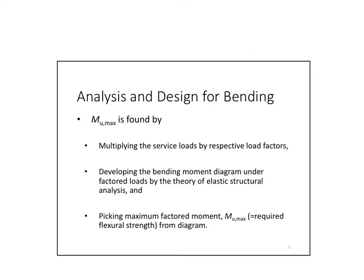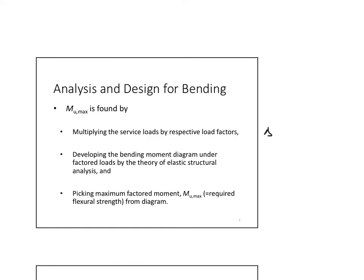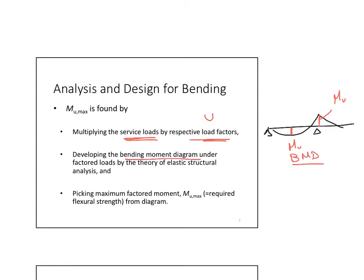Where do we get MU from? From regular analysis of structures. Looking at any beam, we have some bending moments, and the maximum moment will be our MU. We get this from service loads multiplied by load factors — remember U — and by developing bending moment diagrams, then picking the maximum factored moment, which is required to find the flexural strength.